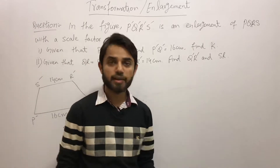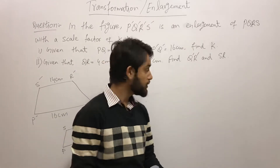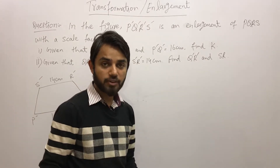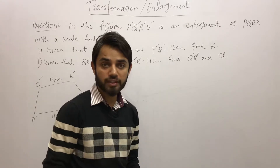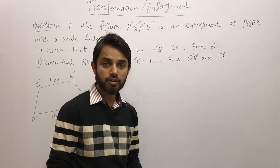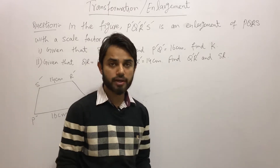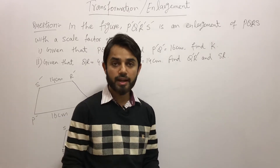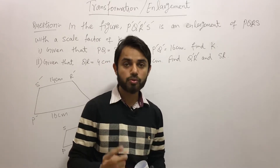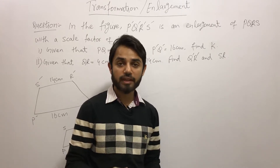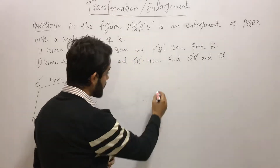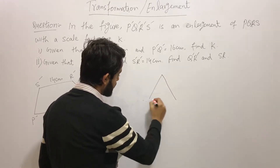First, let us understand what is meant by congruent figures and similar figures. In general terms, two geometrical shapes or two figures are said to be congruent figures if their corresponding angles are congruent and their corresponding sides are also congruent. Congruent means equal — so two figures are said to be congruent if their corresponding angles are equal and their corresponding lengths are equal.